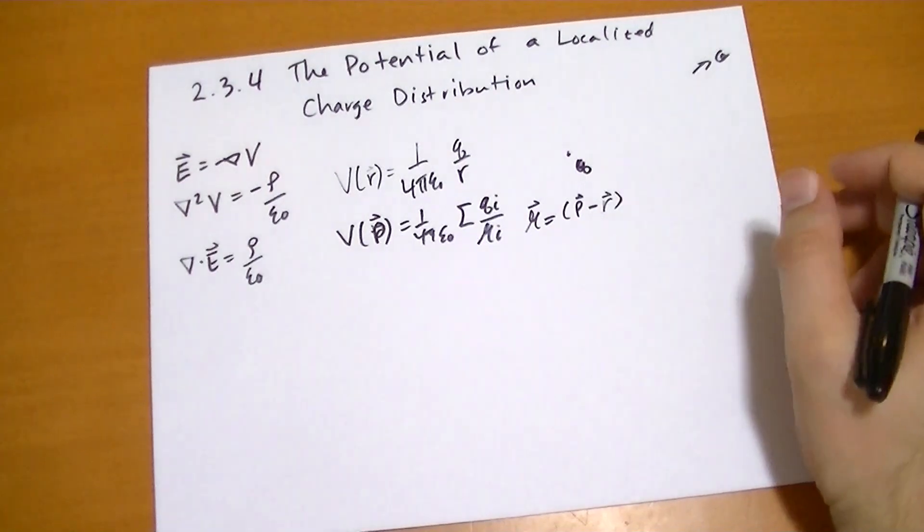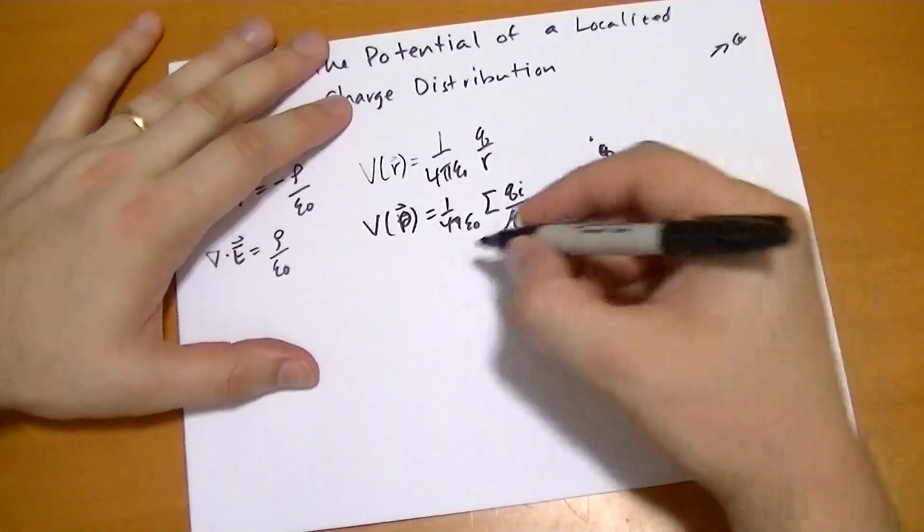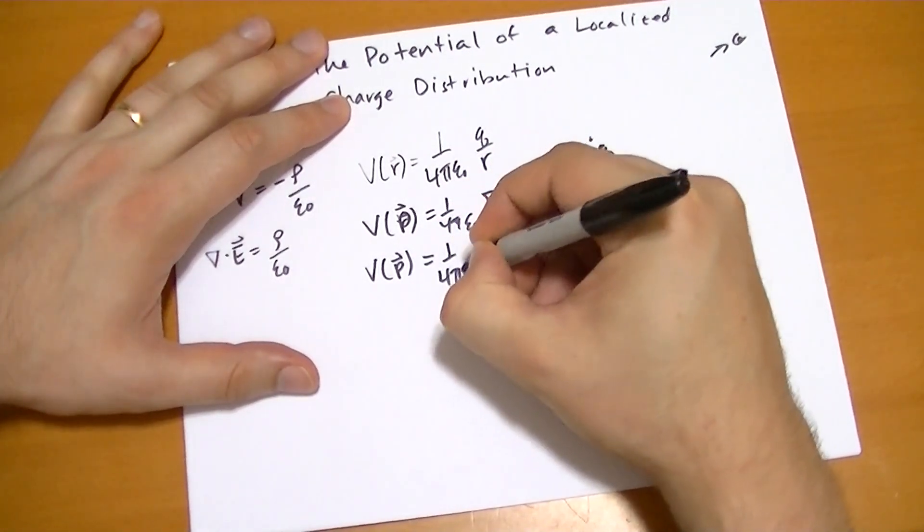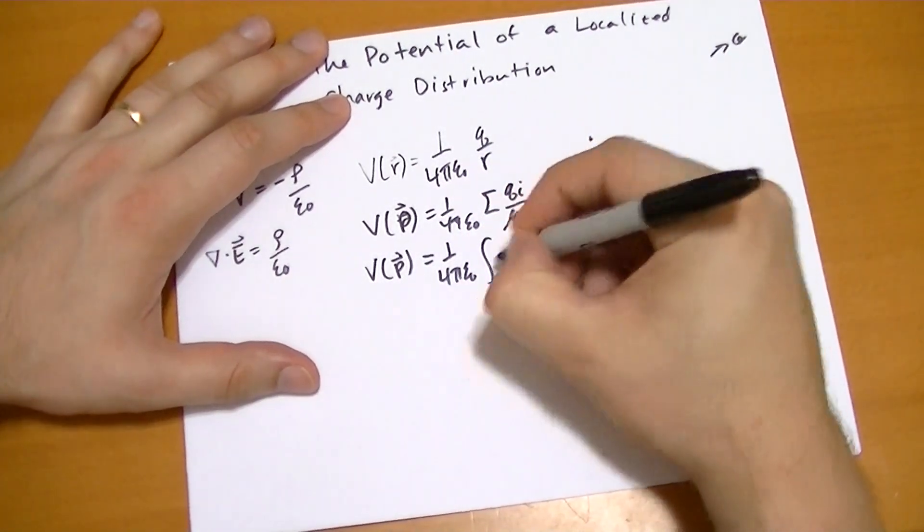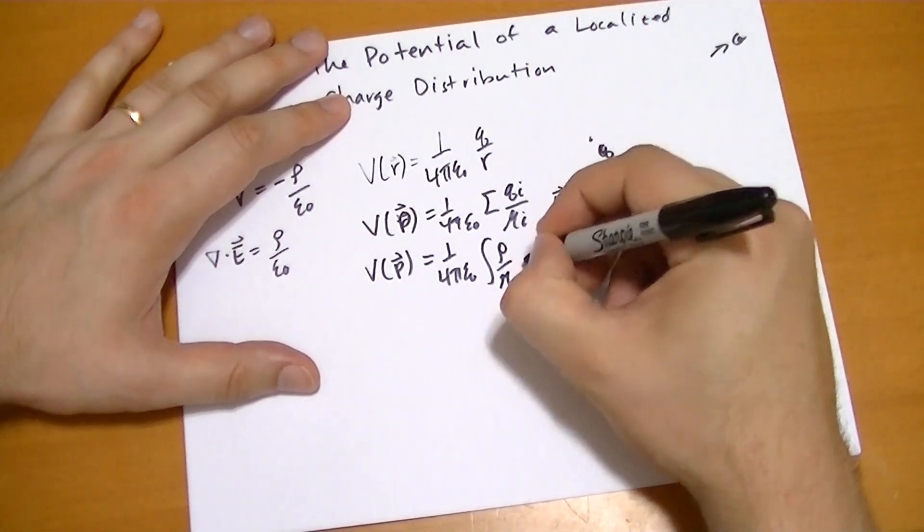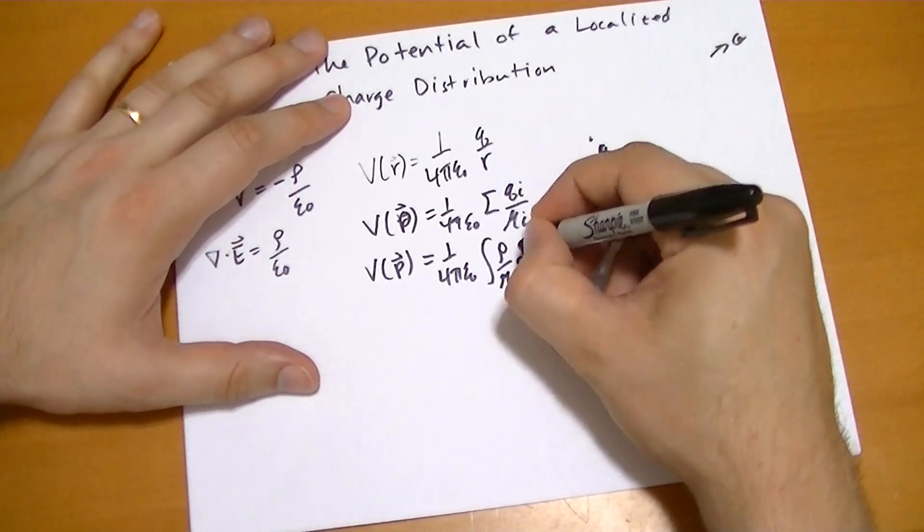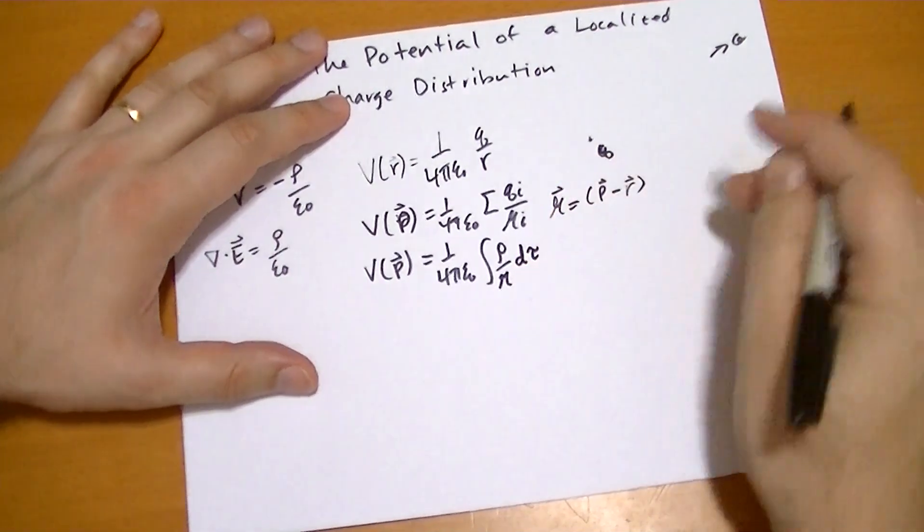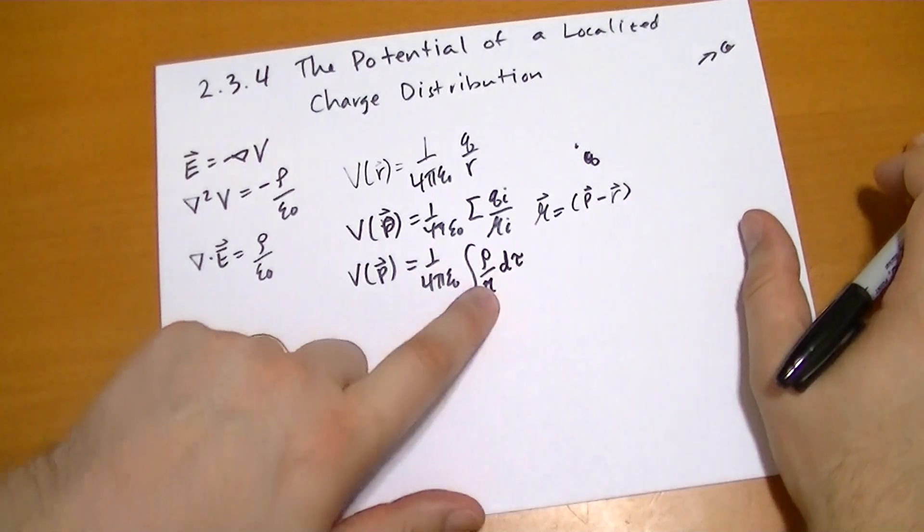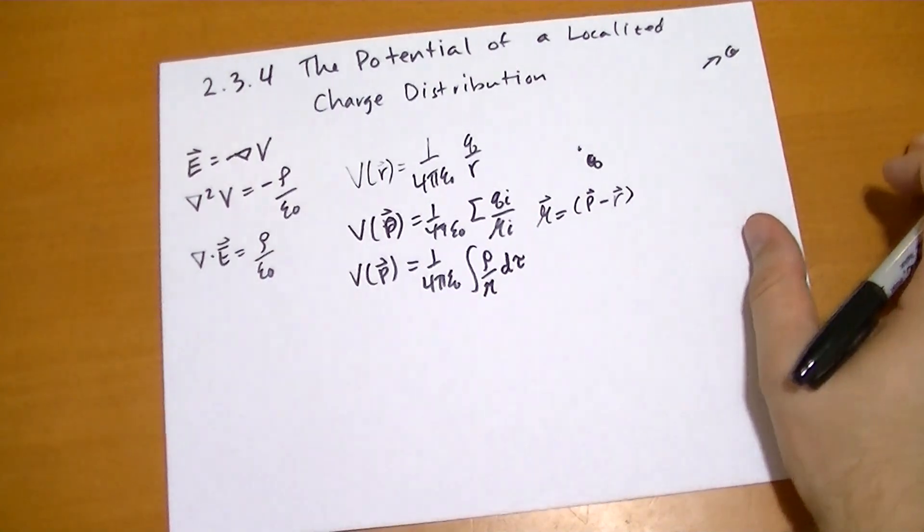And then, of course, we can turn this into a continuous distribution. 1 over 4 pi epsilon naught and the integral of all space of rho over the distance to the point charge of d tau. Distance from the particular point we're doing the integral at to the point that we're interested in.